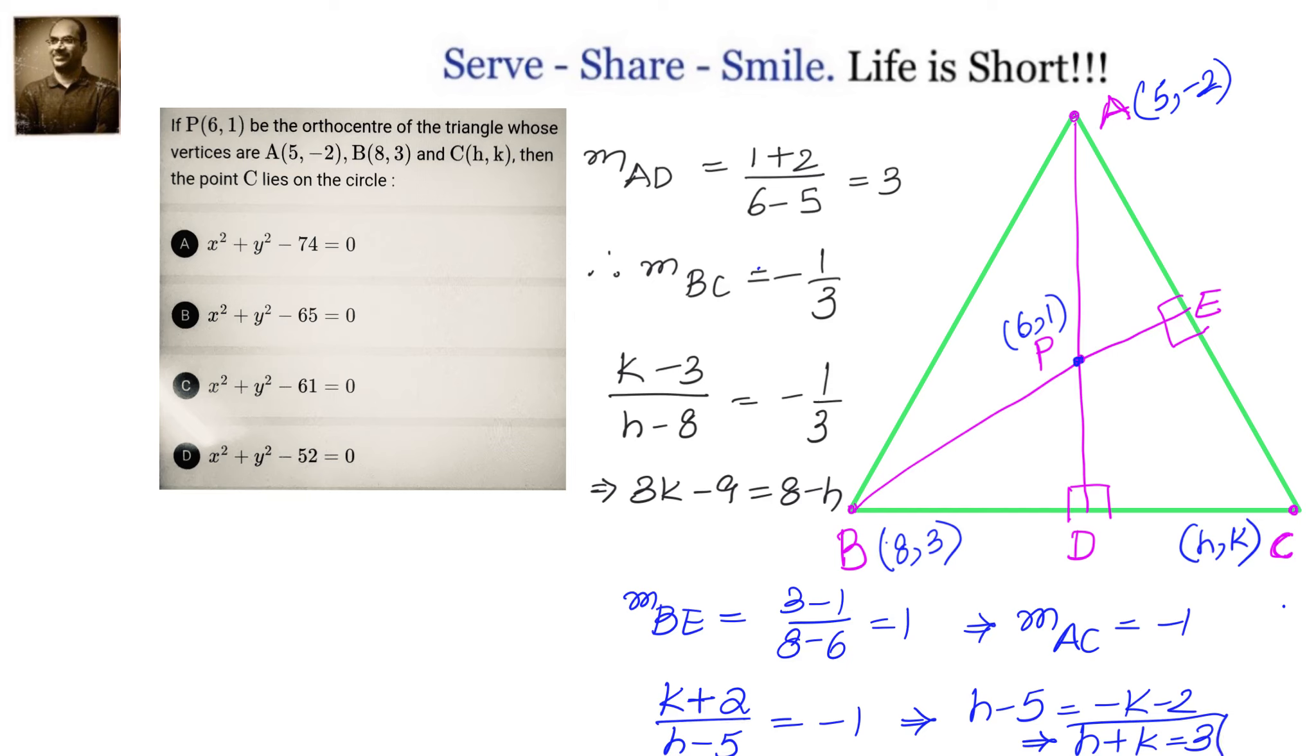Now we have two conditions. One is H plus K equals 3, and another one is H plus 3k equals 17. Now we can easily solve this and find out the values of H and K. H plus K is 3, H plus 3k is 17. We are adding 2k to get 14, that means K equals 7. K equals 7, H equals minus 4.